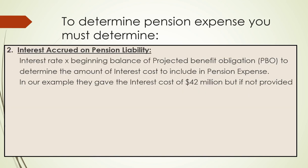Next is the interest accrued on pension liability. You multiply the interest rate times the beginning balance of the projected benefit obligation (PBO) to determine the interest to include in pension expense. In our example, the interest cost is given as 42 million, but if not provided you would take the actuarial rate of 7% times the beginning balance of the PBO to get that 42 million.